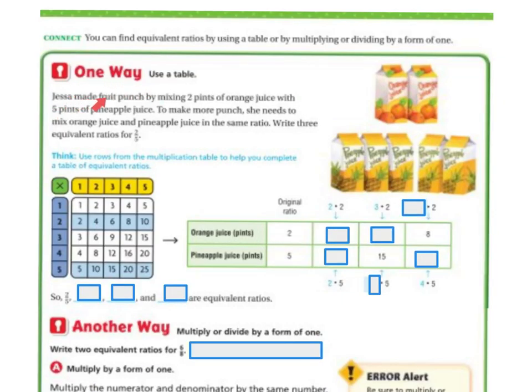One way. Jessie made a fruit punch by mixing 2 pints of orange juice with 5 pints of pineapple juice. To make more punch, she needs to mix the orange juice and pineapple juice in the same ratio. Otherwise, it'll taste totally different. We need to write 3 equivalent fractions for 2 to 5. Use the rows of multiplication tables to help you complete the tables. So, 2 to 5 is my original ratio. There's my 2's, and there's my 5's. For every 2, it would be 5. If I had 4, it'd be 10. If I had 6, it'd be 15. If I had 8, it'd be 20.